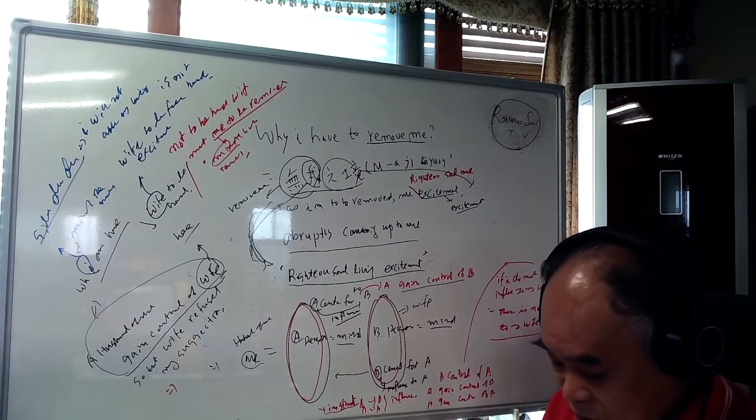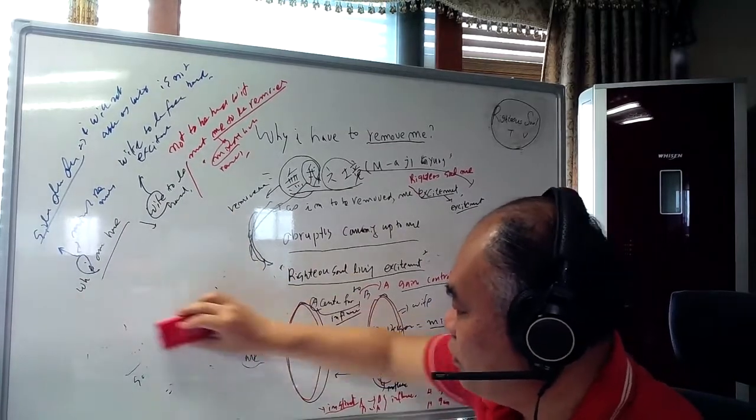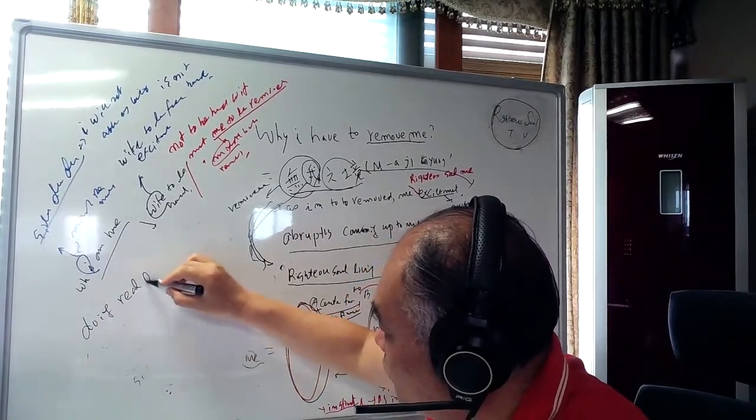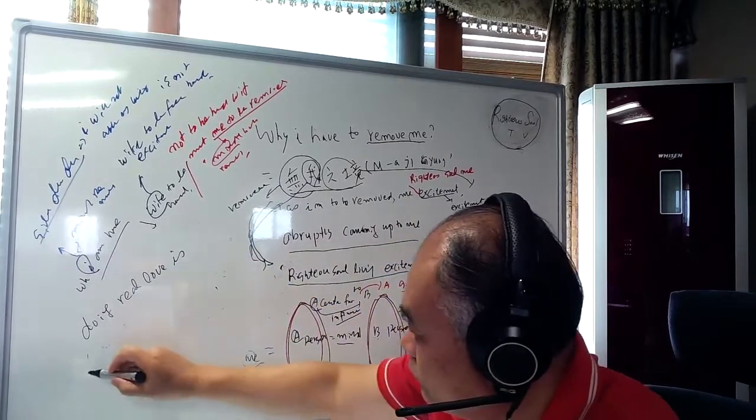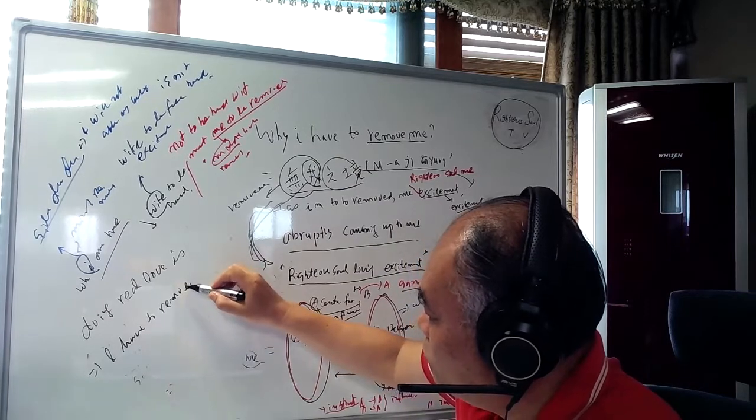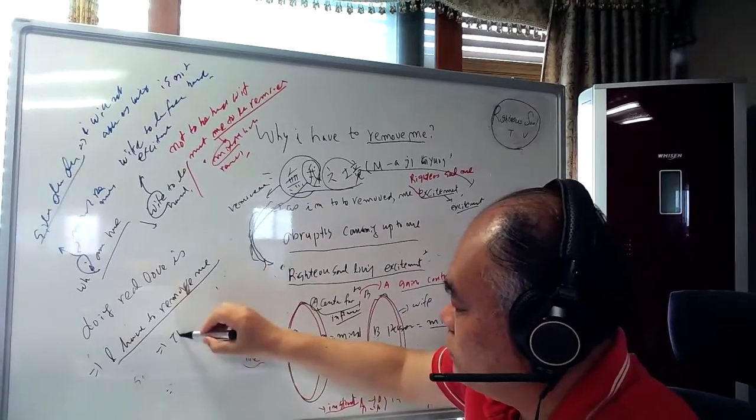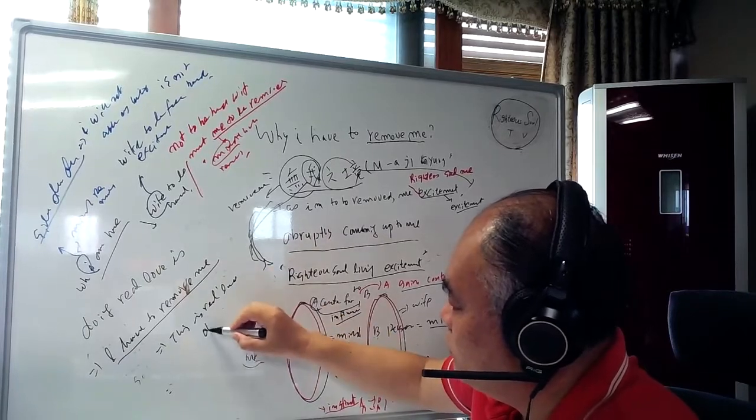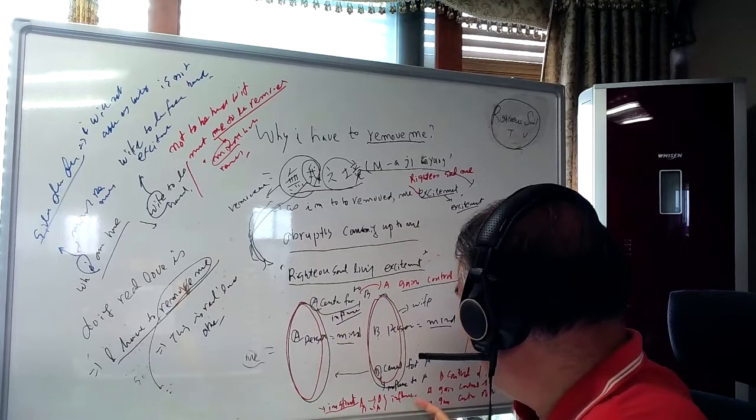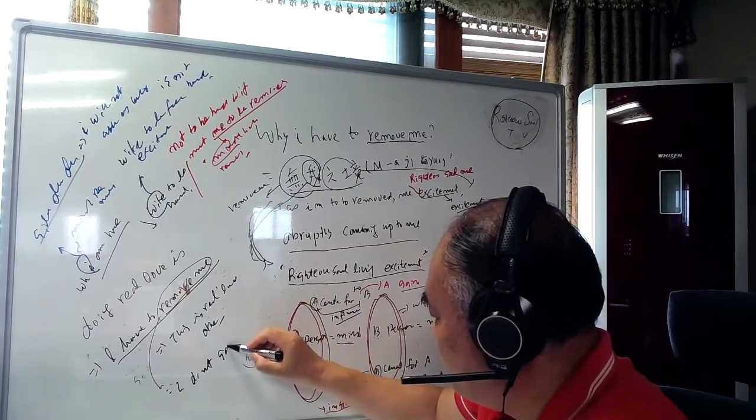Loving truly - doing real love is - I have to remove me. This is real love. Remove me is - I never just do not gain control. This is love.